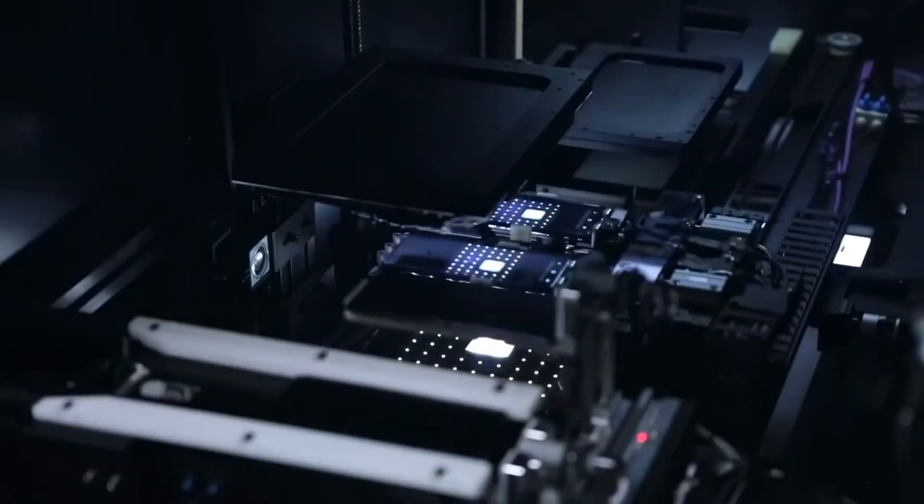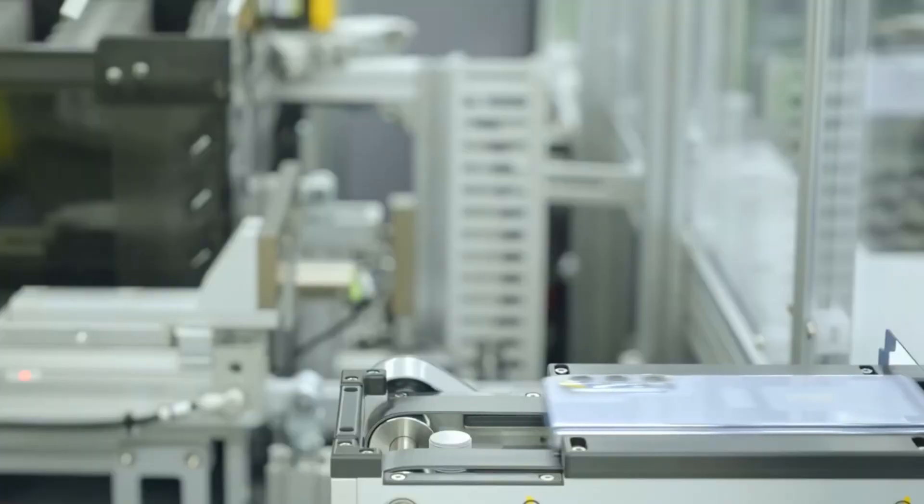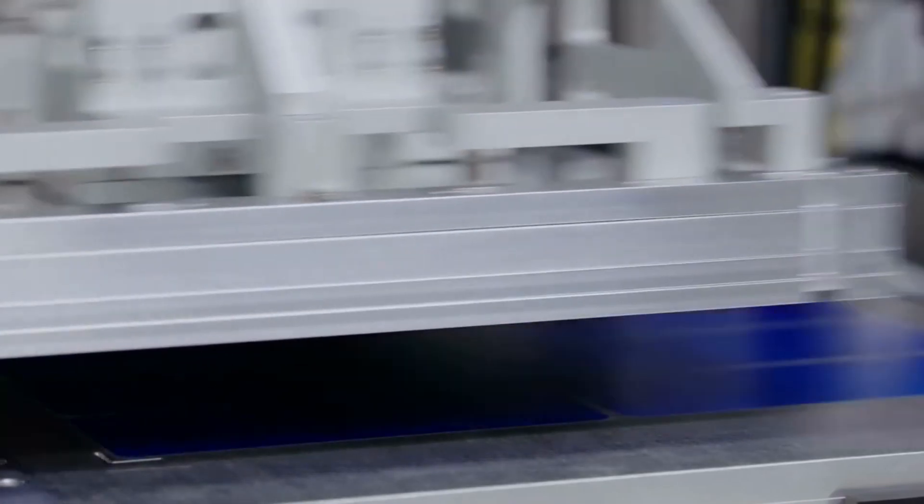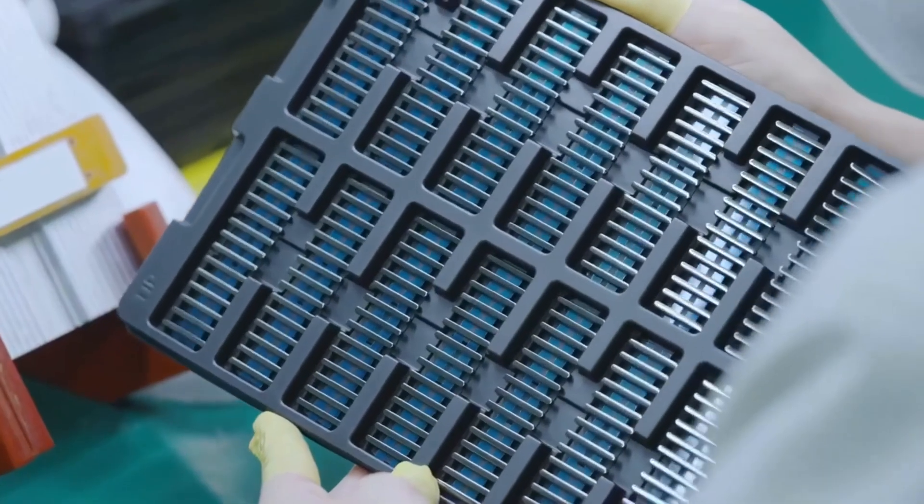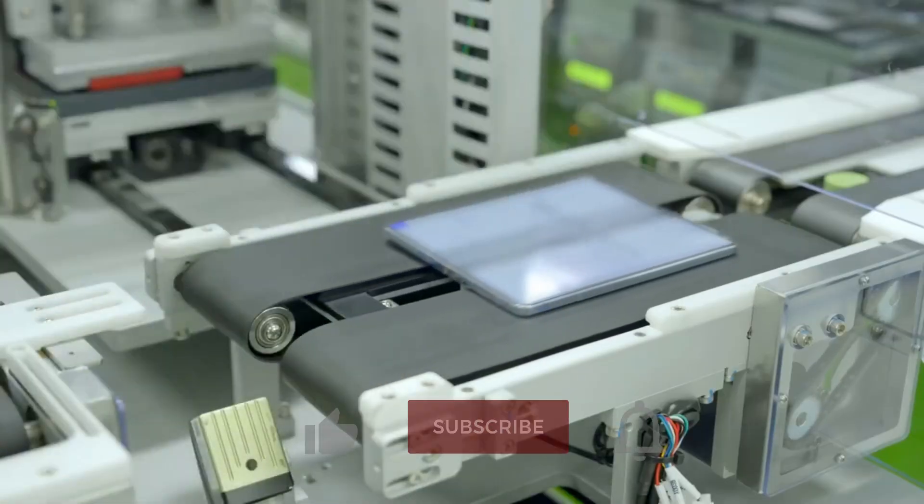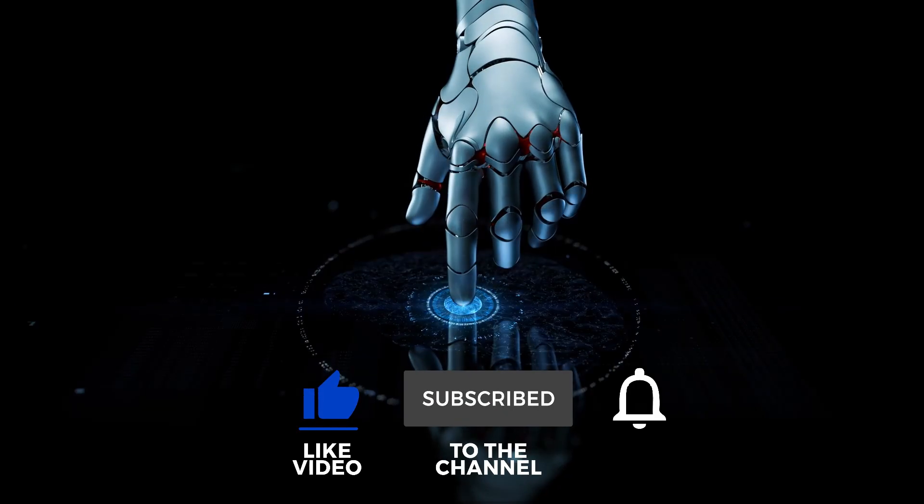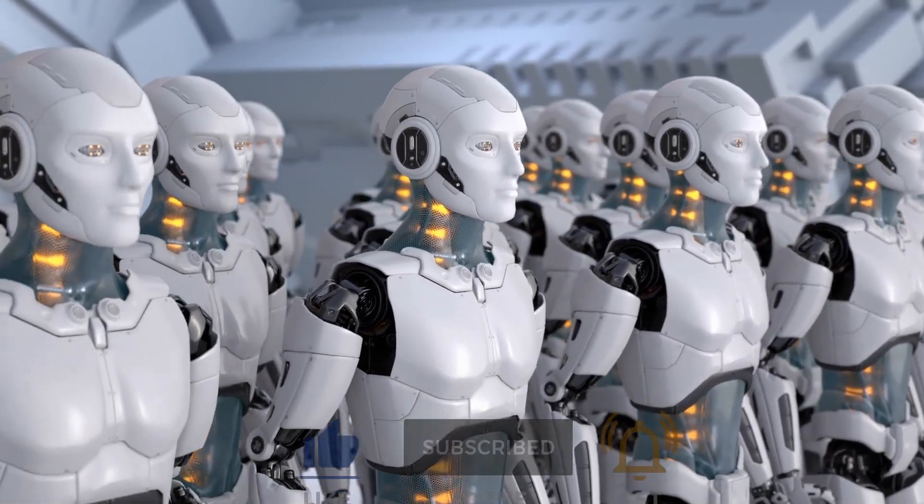What amazed you most about Samsung's manufacturing process? The robot army? The 40-minute production time? Or the fact that your phone screen is made of glass thinner than your hair? Drop a comment below and let me know. And if you want to see more behind-the-scenes content about the technology that powers our world, smash that subscribe button and hit the notification bell. Trust me, you won't want to miss what we're uncovering next. Until next time, keep questioning how the world really works.